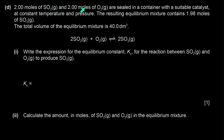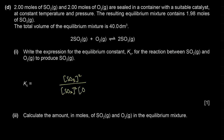Two moles of SO₂ and two moles of O₂ are sealed in a container with a catalyst at constant temperature and pressure. The equilibrium mixture contains 1.98 moles of SO₃, and the total volume is 40 dm³. The Kc expression is the concentration of SO₃ squared divided by the concentration of SO₂ squared times the concentration of O₂.